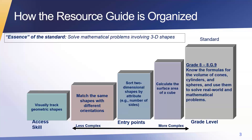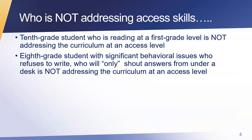Kids at the access level are sometimes referred to as the one percent of the one percent — it really is a very small group. Let me share some examples of students who are not addressing access skills. The first example: a 10th grade student who's reading at a first grade level is not addressing the curriculum at an access level.